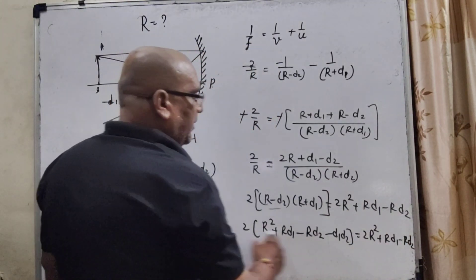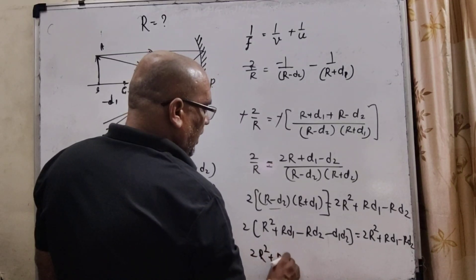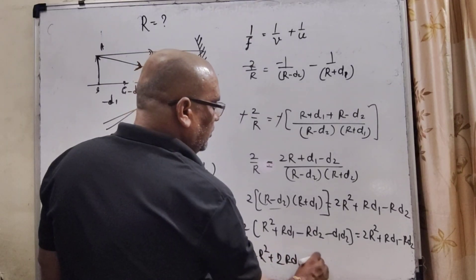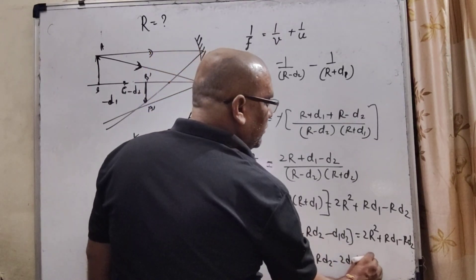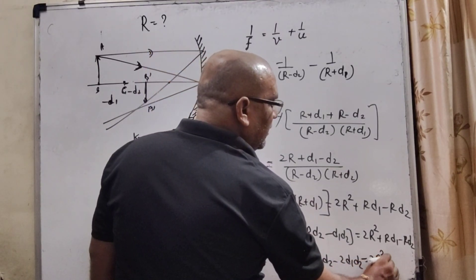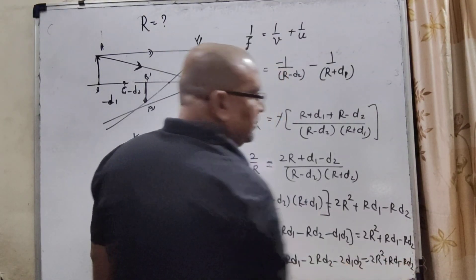Now, multiply by 2, then 2R square, 2Rd1, 2Rd2, 2Rd2, 2d1d2 is equal to 2R square. Rd1 minus Rd2.